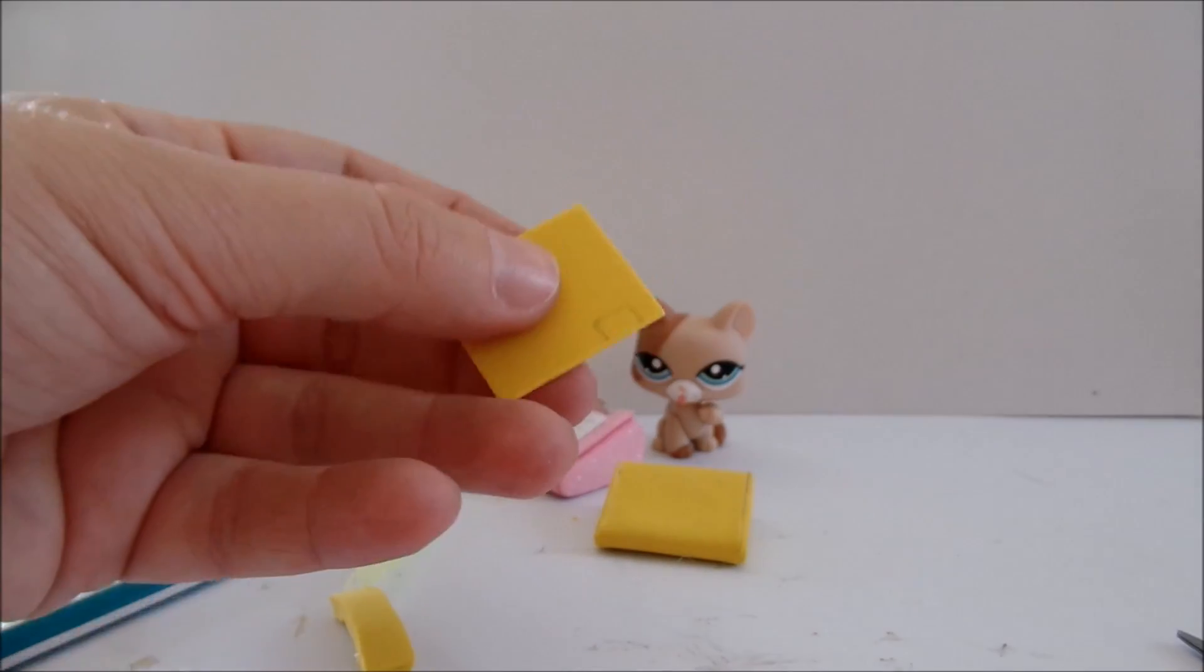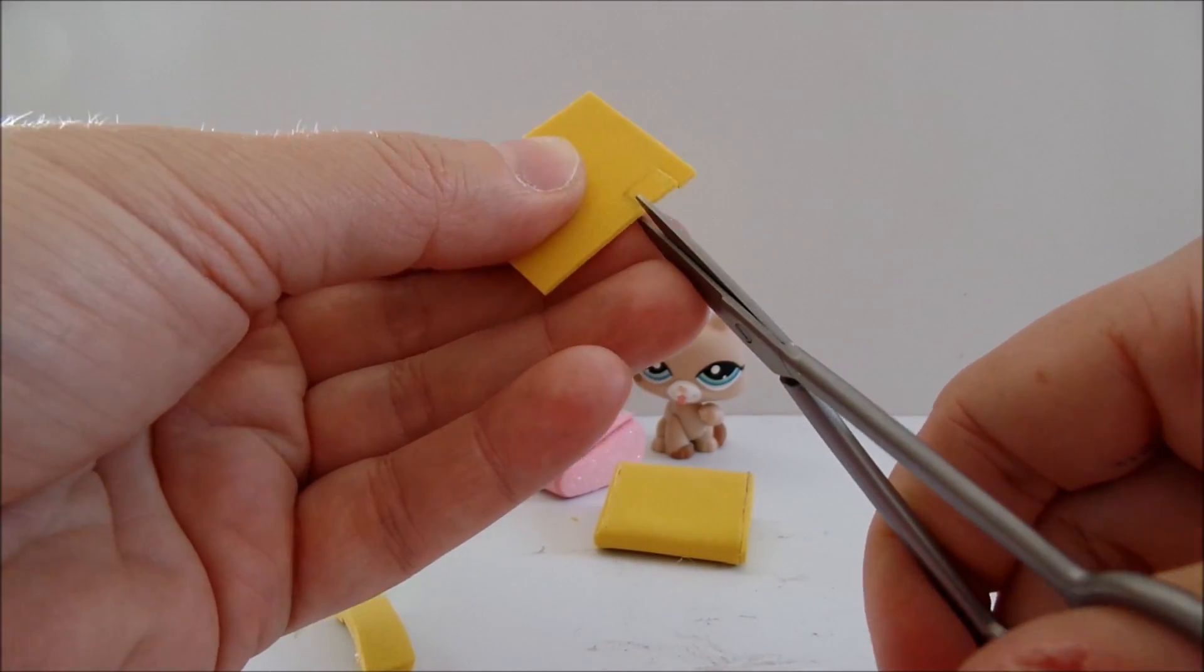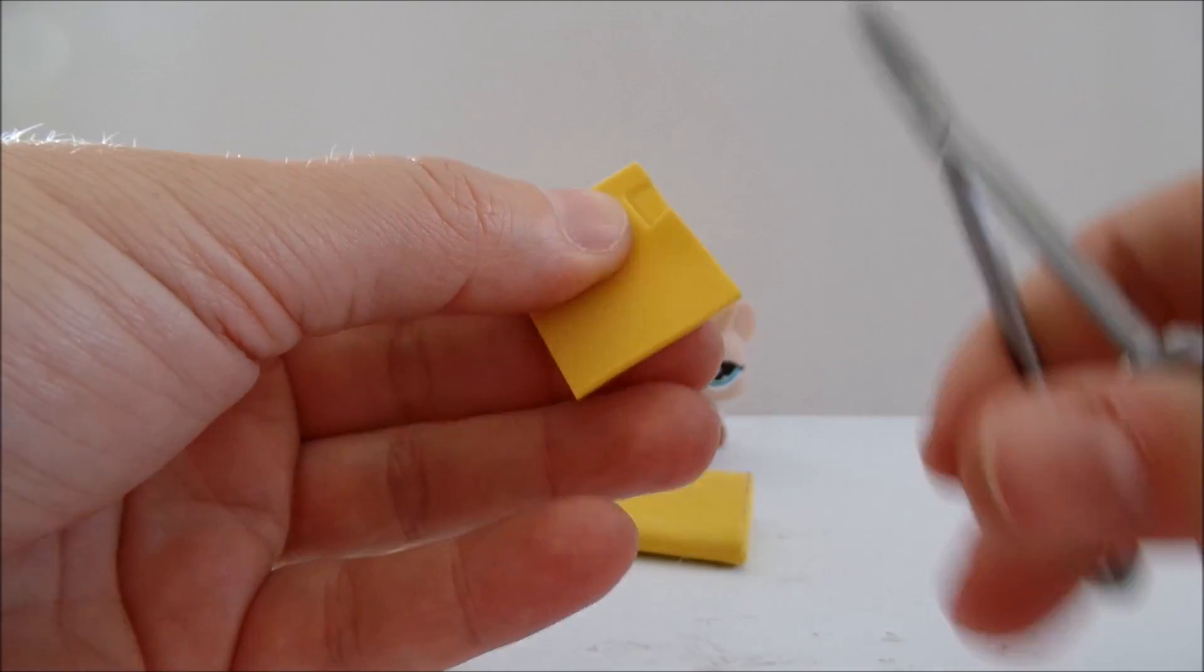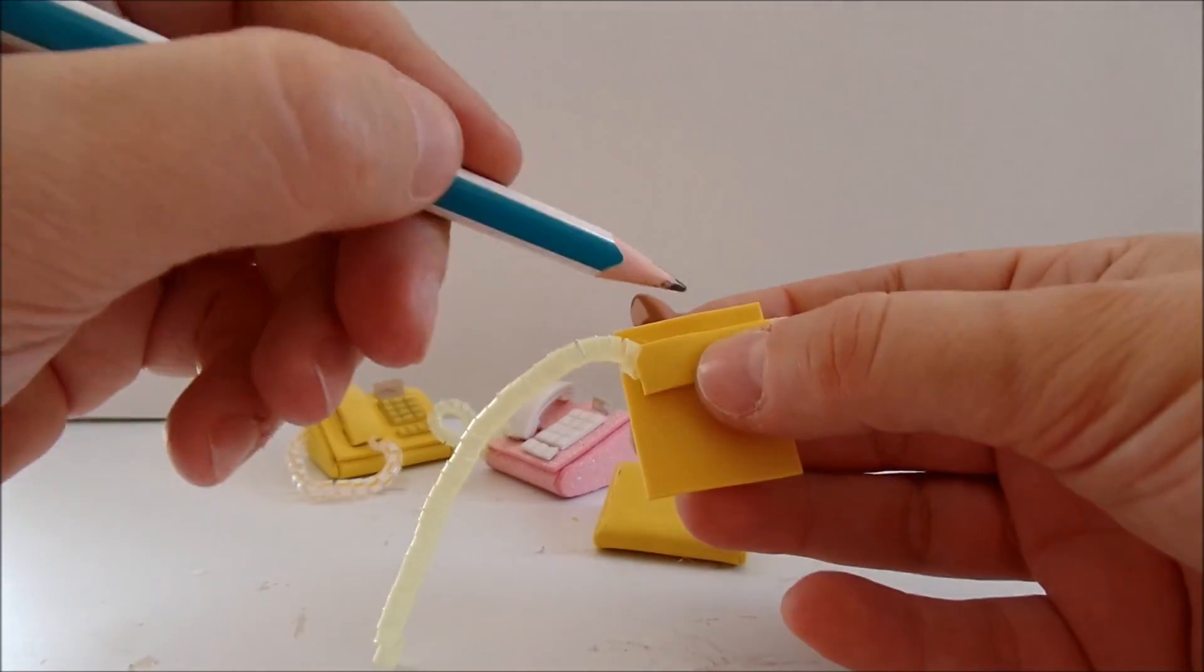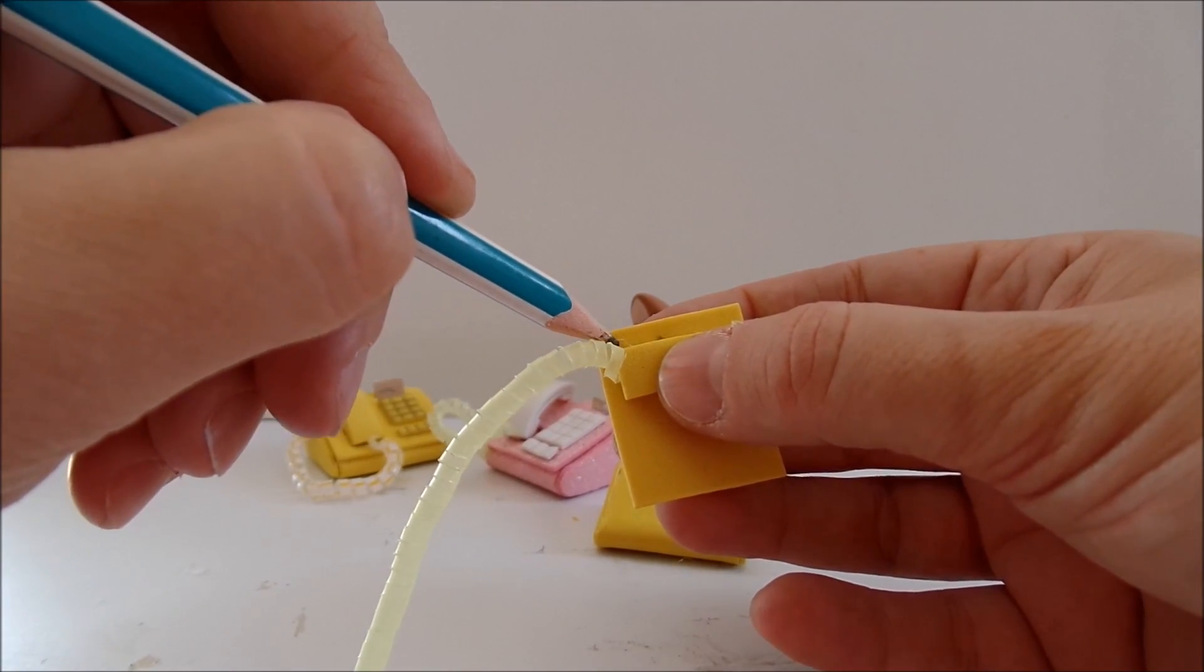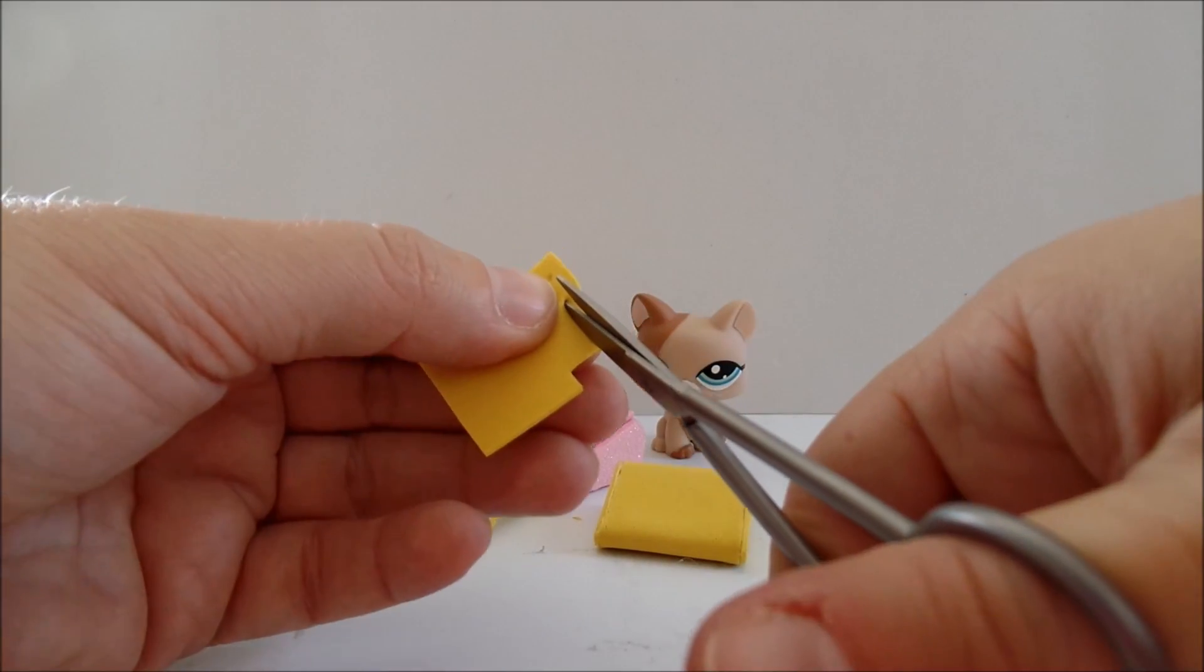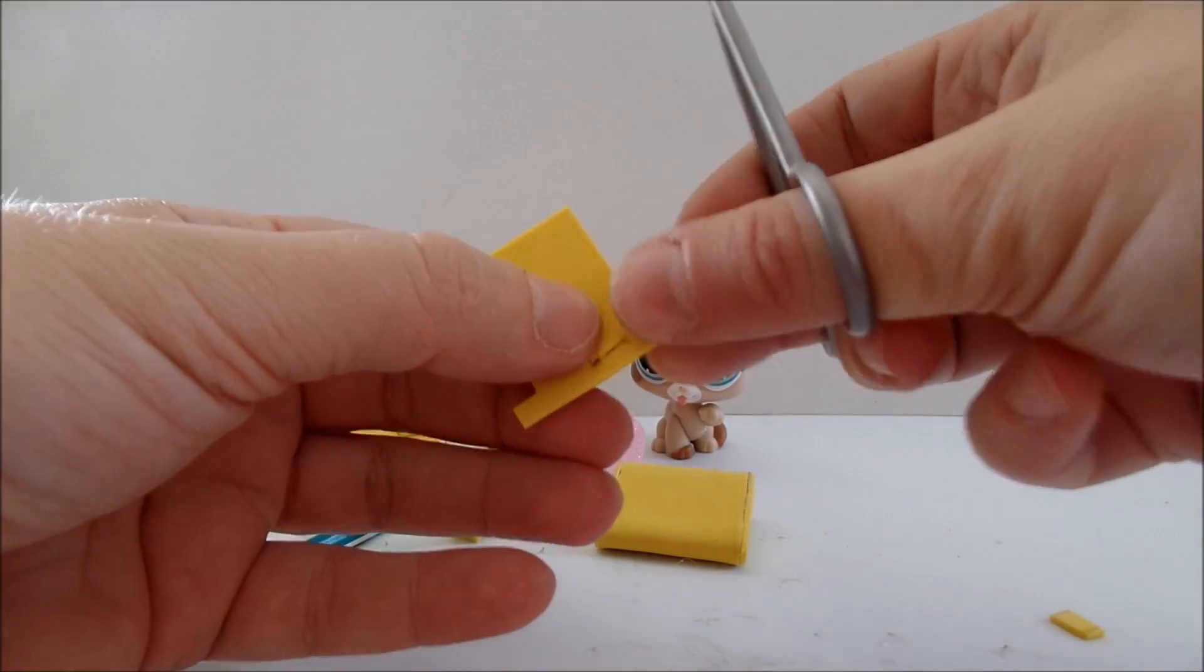And we will make sure that the handset can fit in. We want the bottom of the handset to fit in. I will mark here two dots. This is where I'm going to cut. And I will cut out a square.